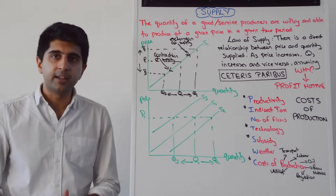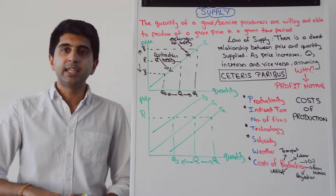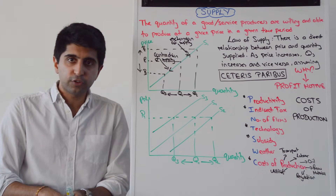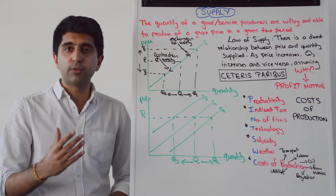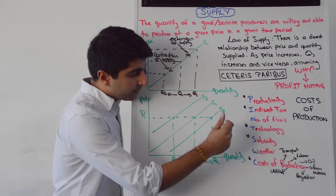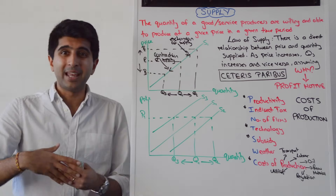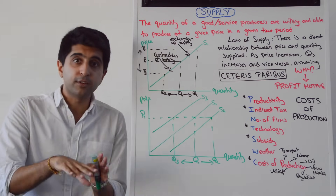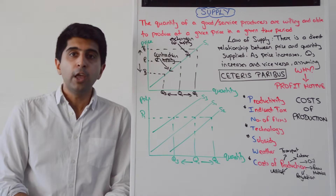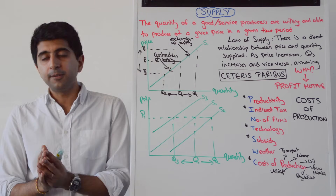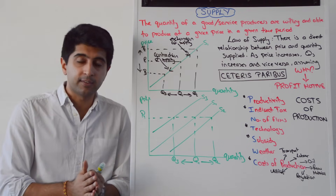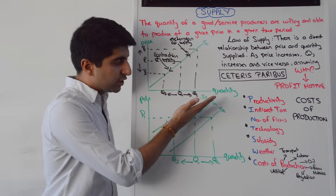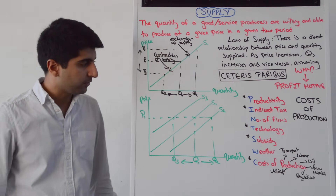S is subsidy. A subsidy is a money grant given by governments to producers to lower costs of production and encourage an increase in output. If a subsidy is given or increased in size, the supply curve shifts to the right because costs of production have been lowered. Whereas if a subsidy has been taken away or decreased in size, costs of production increase and the supply curve shifts to the left from S1 to S3.